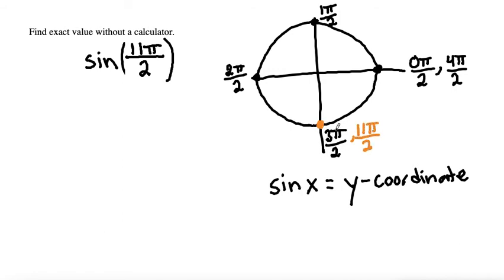11π/2 is coterminal with 3π/2. What we need to see is the coordinate, because we need to find the y-coordinate, which will give us our exact sine value. The coordinate here is x value 0, y value negative 1.